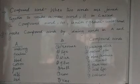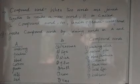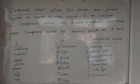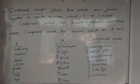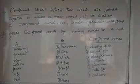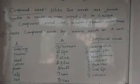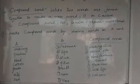अब आप अपनी textbook पे देखें, page number 33 पे जाएं। वहाँ पे एक question है आपके लिए और मैंने वो word पे भी लिखा हुआ है। Make compound words by joining words in A and B. दो columns हैं हमारे पास — column A और column B। हमें column A को column B के साथ जोड़ना है और appropriate word लगाना है ताकि हमें एक compound word मिल सके।